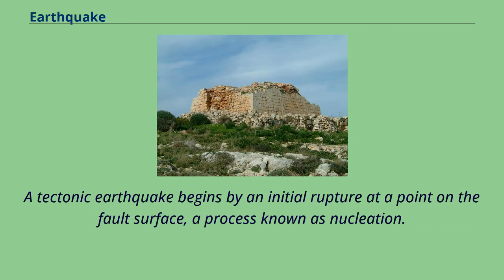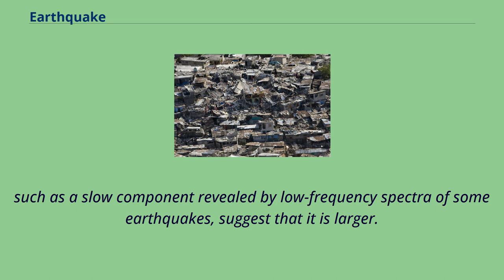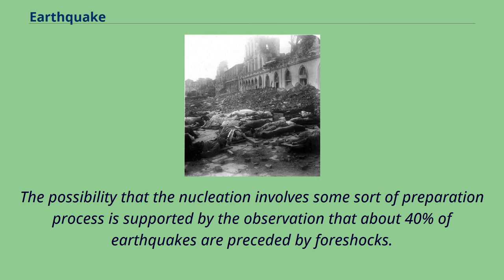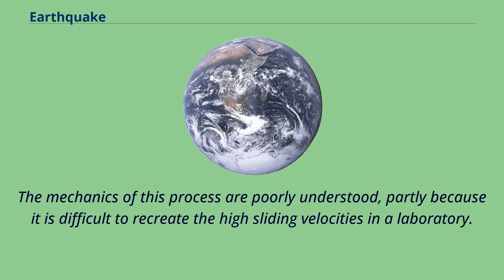A tectonic earthquake begins by an initial rupture at a point on the fault surface, a process known as nucleation. The scale of the nucleation zone is uncertain, with some evidence — such as the rupture dimensions of the smallest earthquakes — suggesting it is smaller than 100 meters, while other evidence, such as a slow component revealed by low-frequency spectra of some earthquakes, suggests it is larger. The possibility that nucleation involves some sort of preparation process is supported by the observation that about 40% of earthquakes are preceded by foreshocks. Once the rupture has initiated, it begins to propagate along the fault surface, though the mechanics of this process are poorly understood, partly because it is difficult to recreate the high sliding velocities in a laboratory.